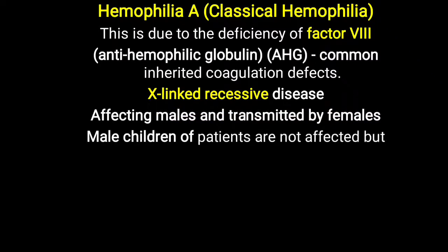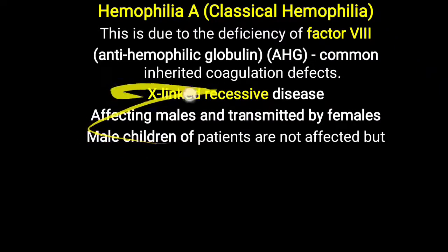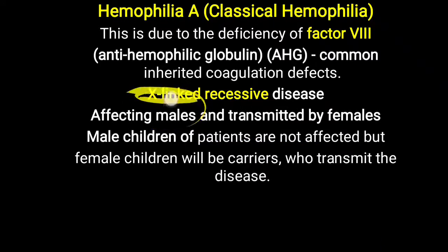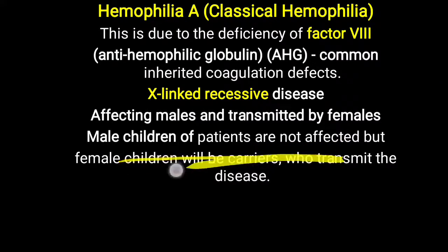Male children of a haemophilic patient are mostly not affected, because from the affected male, only the Y chromosome is transmitted to the male child — so the male child does not receive the defective X chromosome. However, the defective X chromosome is passed to the female child, who becomes a carrier because the other X chromosome from the mother is normal. This carrier female can then transmit the disease further. This is the X-linked recessive pattern of Haemophilia A.